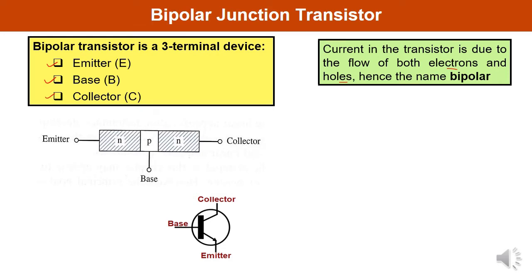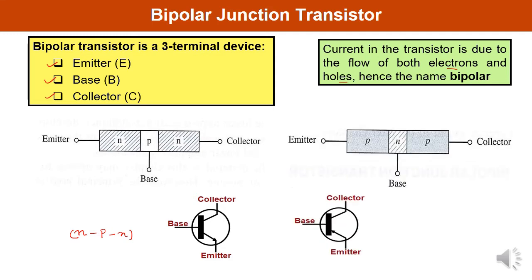In the NPN transistor, emitter and collector are on the outer side made from N-type semiconductors, and P is the base which is slightly doped. The circuit symbol for the NPN transistor has an outward arrow. For the PNP transistor, emitter and collector are made from P-type semiconductors, base is from N-type and very thin, and the arrow is inward.